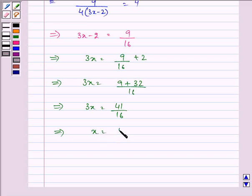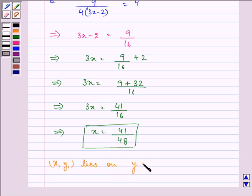The value of x is 41 upon 16 into 3 gives us 48. We know that x1, y1 lies on y equal to under root 3x minus 2.